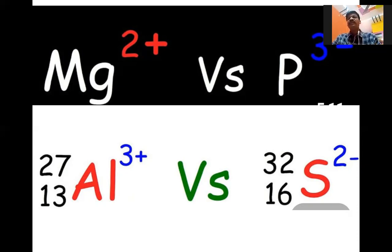Aluminium loses three electrons, so it is a cation written as three plus. Sulfur can take two electrons — gains two electrons — so indicated with two minus, and the sulfur valence is 2. Magnesium valence is also 2. Phosphorus valence is 3. Aluminium valence is 3. But magnesium loses electrons, so two plus. Sulfur gains electrons, so two minus. Phosphorus gains electrons, so minus three. Aluminium loses three electrons, so plus three cation.